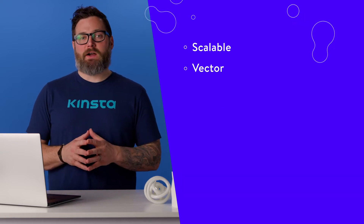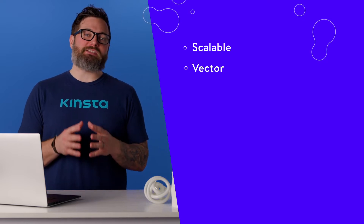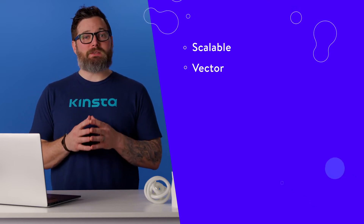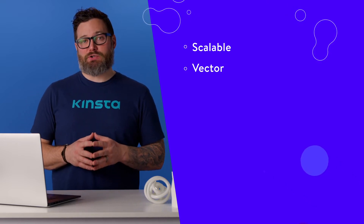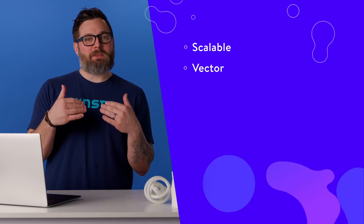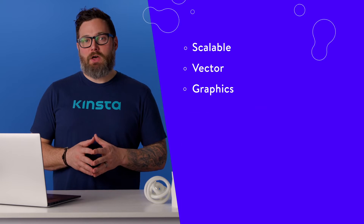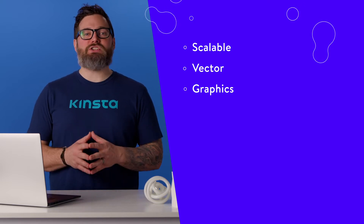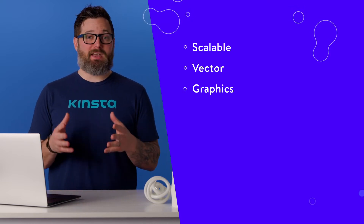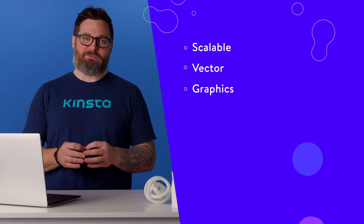Vector: most image file types contain pixels, but vectors are essentially pieces of code that render an image in real time, converting it to the pixels you see on your screen. While they display the same image, what goes on in the background is very different. Graphics: SVG is an image file type just like PNG, JPEG, or GIF — it just goes about things a little differently.